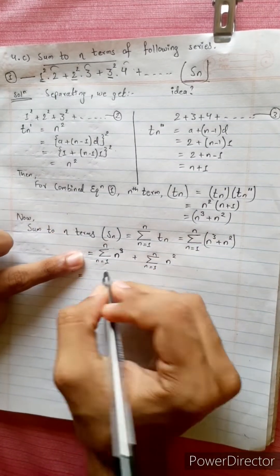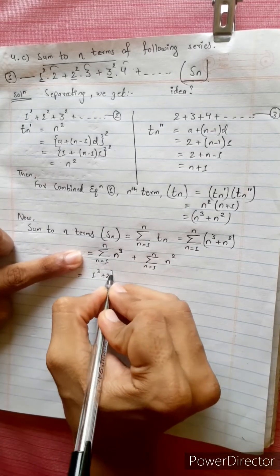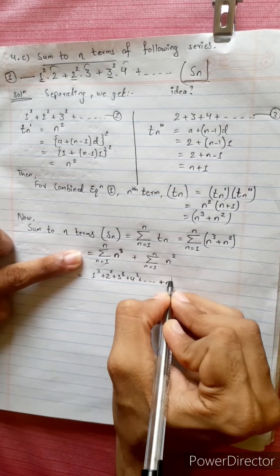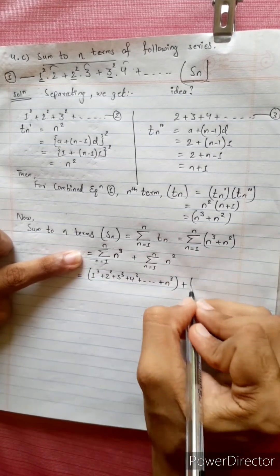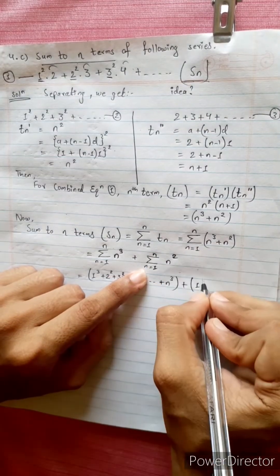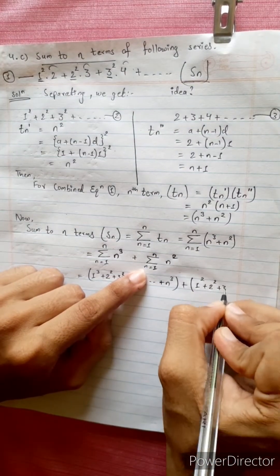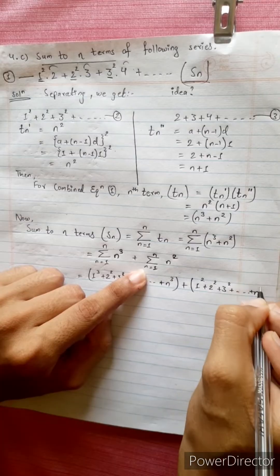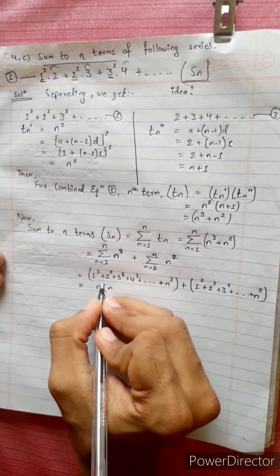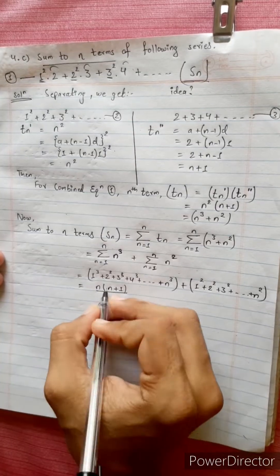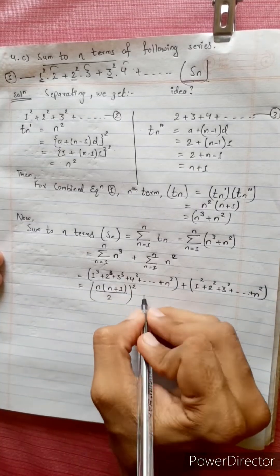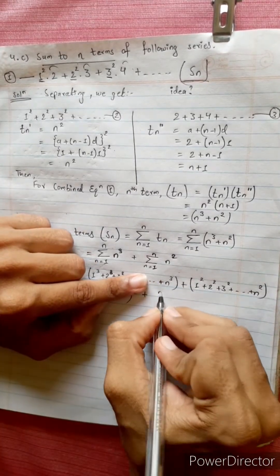We have summation of n cubed, and sub terms: 2 cubed, plus n sum 1, plus sub 2 cubed, plus 2 squared plus 3 squared plus n squared. This involves the sum of cubes and sum of squares of natural numbers.